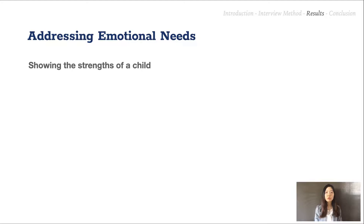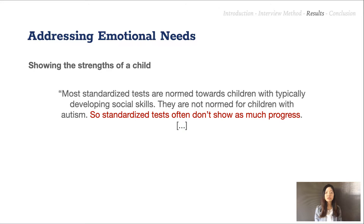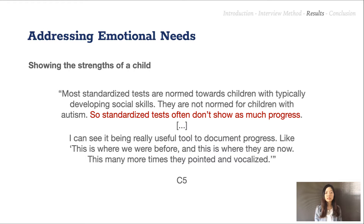Another role of visualization that was brought up was acting as a longitudinal record of a child. While parents and children participated in a single session for our study, web tools could be used to display progress over time by stacking sessions of the same child vertically. Most parents indicated that this could serve as an accurate longitudinal record of their child's development, and clinicians envisioned using this longitudinal record to display pre- and post-intervention assessments to demonstrate the effectiveness of a treatment. One participant said, 'Most standardized tests are normed towards children with typically developing social skills. They are not normed for children with autism, so standardized tests often don't show as much progress. I can see this visualization web tool being a really useful tool to document progress — like, this is where we were before, and this is where we are now, this many more times they pointed and vocalized.'